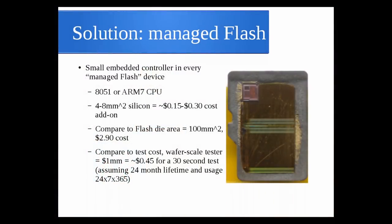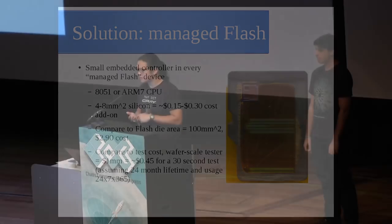One of the interesting things we found was that inside every card was a microcontroller — a small embedded device to manage the flash. It typically tends to be an 8051 or ARM7 type CPU, a few square millimeters of silicon. As a former silicon guy, my back-of-the-envelope calculation puts it at about 25 cents added to the cost of the card.